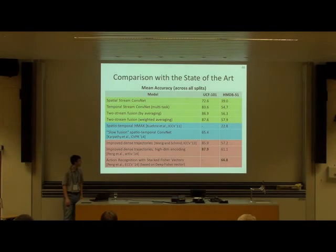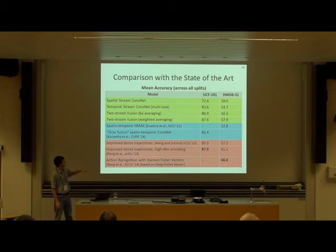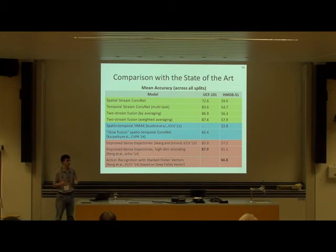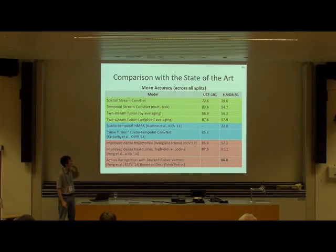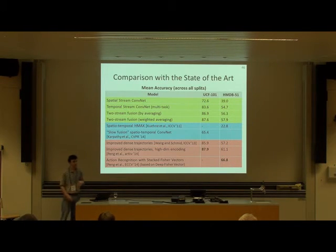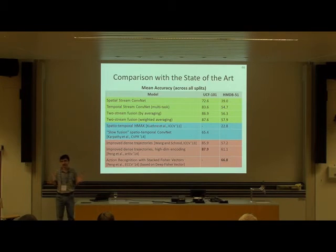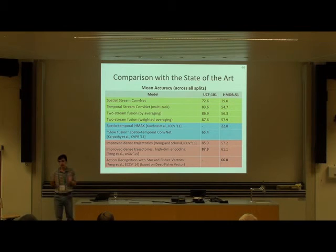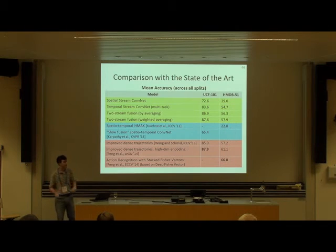Here is a comparison with the state of the art on UCF. When you combine our spatial stream and temporal stream, performance improves over each individual stream. Even a simple combination by averaging helps a lot. Using a weighted combination with higher weight for the temporal stream gives slightly better results. There's some hope that if you have more labeled video data, you can train a proper fusion module — with a few fully-connected layers — to merge these streams for the final result.